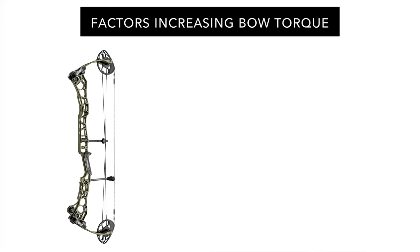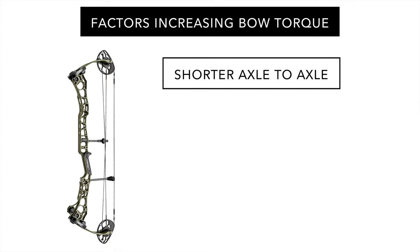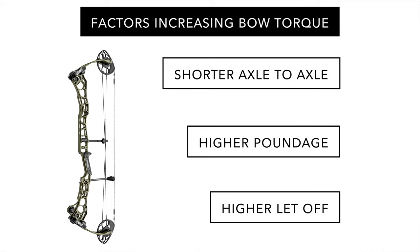If you're a tree stand hunter — I am — let's talk about how this applies. What compounds the issue for tree stand hunters is that shorter axle-to-axle, higher poundage, and higher let-off means more torque in your hunting bow system. Don't believe me? Screw in your target stabilizer on your hunting bow, pull it back, and see how far it's pointing to the right. The larger the rotation or torque in your bow system, the more it magnifies your missed distance if third axis isn't set correctly.